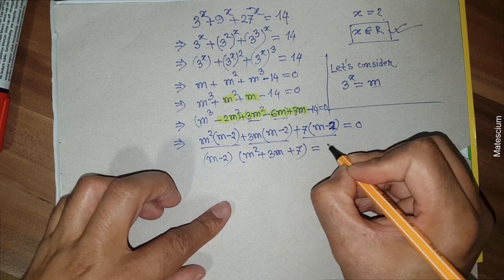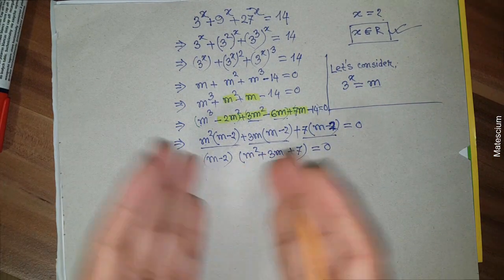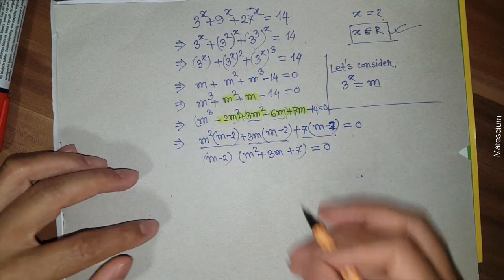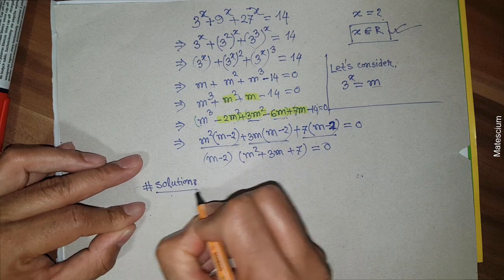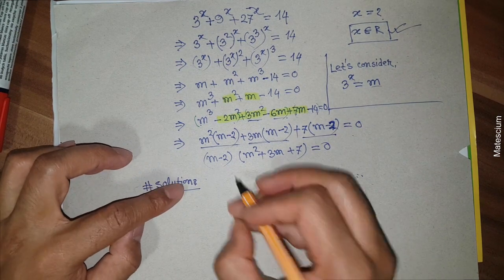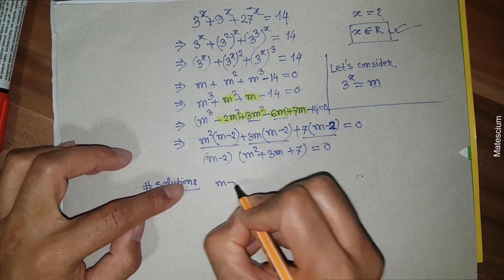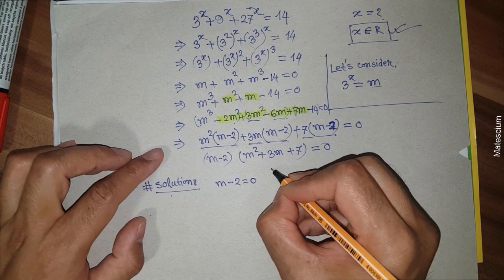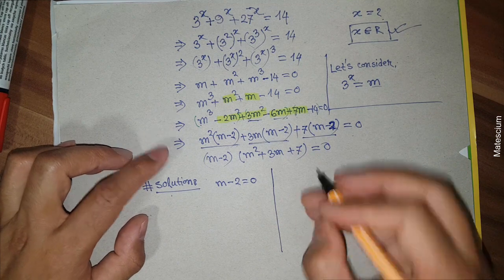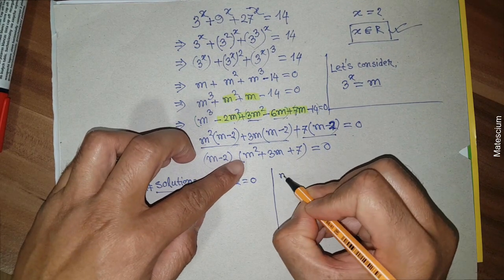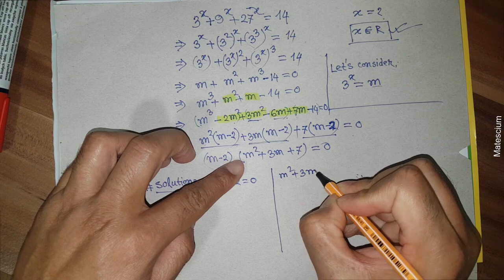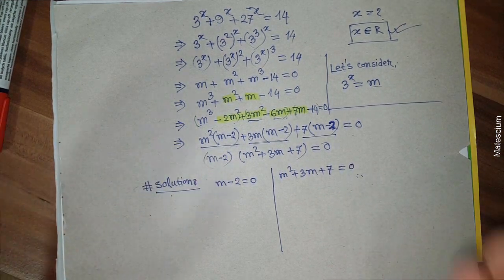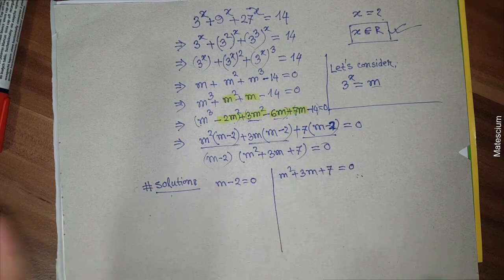Looking at all three groups, we find a common factor of (m minus 2) in each. Taking (m minus 2) common from the three parts, the remaining expression is m squared plus 3m plus 7, giving us: (m minus 2)(m squared plus 3m plus 7) equals 0. This equation has two possible solutions.